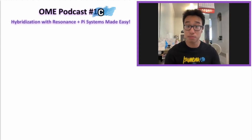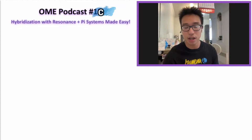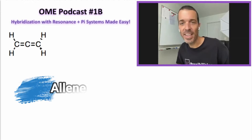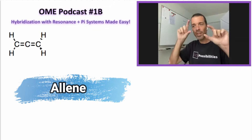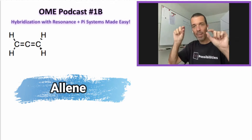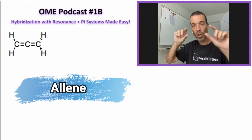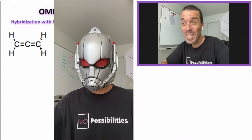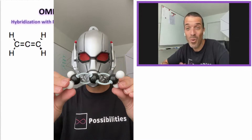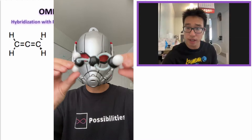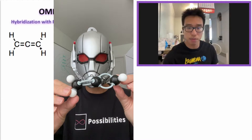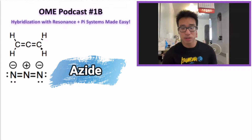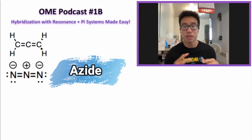This molecule — allene — is unique in that what we've seen so far has a carbon-carbon double bond maybe followed by a single bond or a nitrogen double bond, but this one has a double bond followed by a double bond. It's a neat situation we have to figure out. There's also another molecule, azide, that's very similar but really complicated — it looks like an alien.